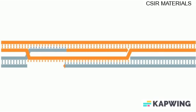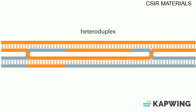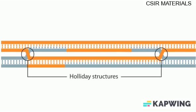The other broken strand is also extended. Ligase joins the free nucleotide ends to form a structure called a heteroduplex. In a heteroduplex, two double-stranded molecules are linked together by junctions called Holliday structures.